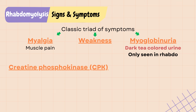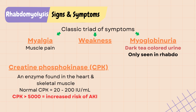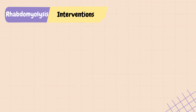The most sensitive lab test for rhabdo is creatine phosphokinase, or CPK, an enzyme found primarily in the heart and skeletal muscle. An elevated CPK indicates leaking from injured muscle cells. Normal CPK level is 20 to 200 international units per milliliter; CPK levels greater than 5,000 have an increased risk of AKI. Myoglobin can be tested at early stages of rhabdo; however, it has a short half-life and may return to baseline before rhabdo is suspected.